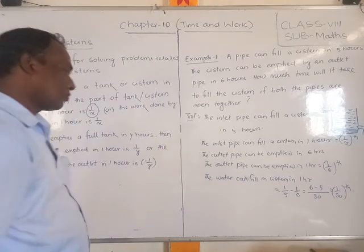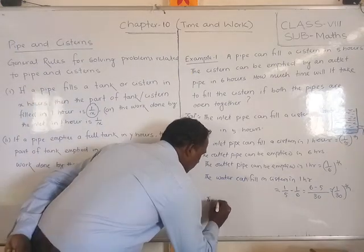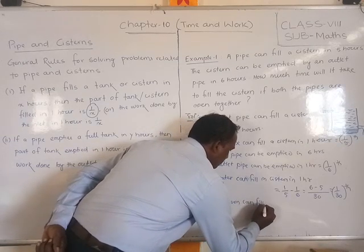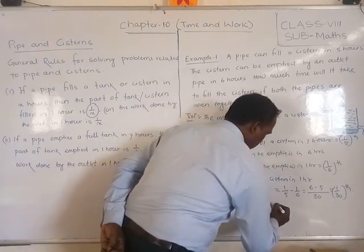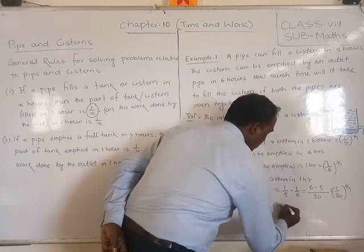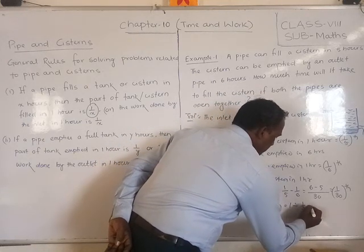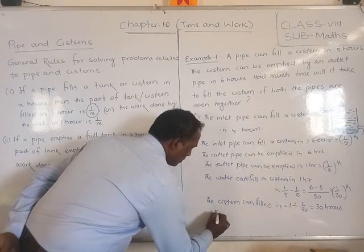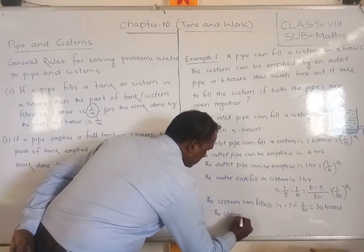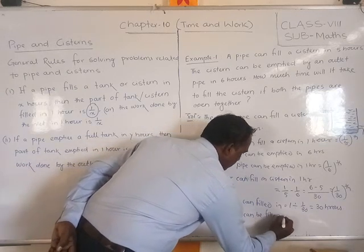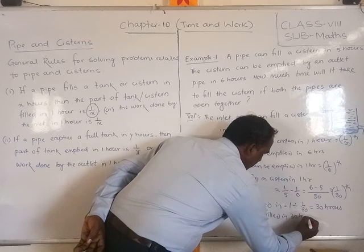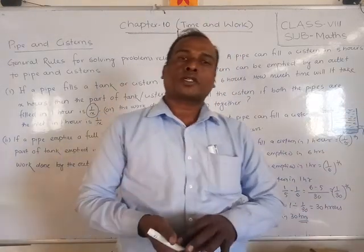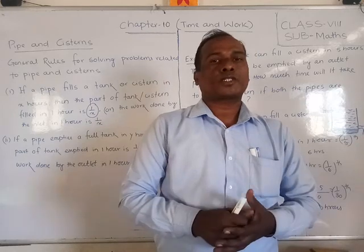So the system can be filled in 1 divided by (1 by 30), which is equal to 30 hours. After 30 hours the system will be completely filled. Now we have to discuss more such problems.